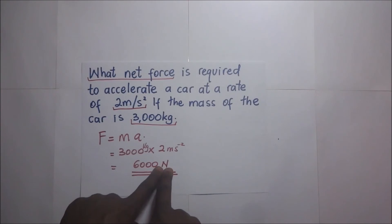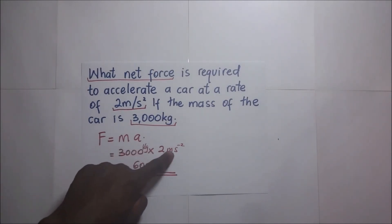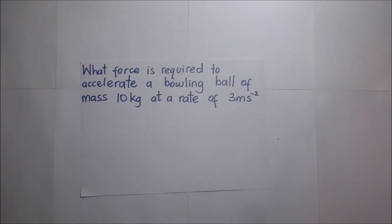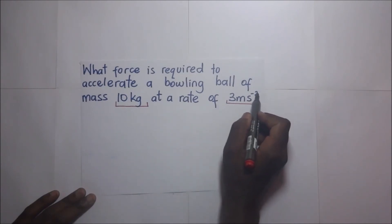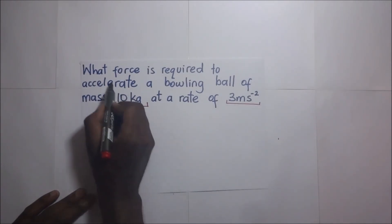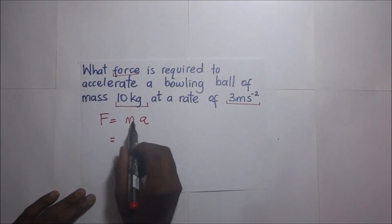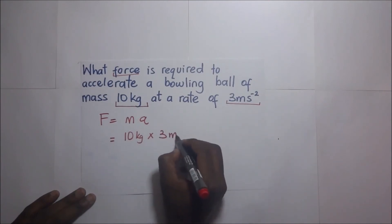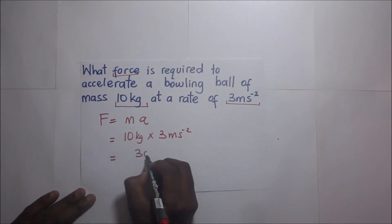Example 2: What is the force required to accelerate a bowling ball of mass 10 kilograms at a rate of 3 meters per second squared? Using F = ma: force equals 10 kilograms multiplied by 3 meters per second squared, giving us 30 Newtons.